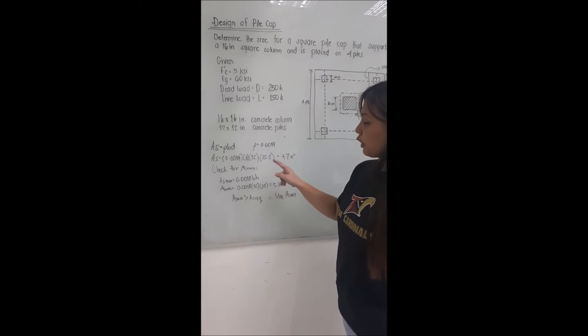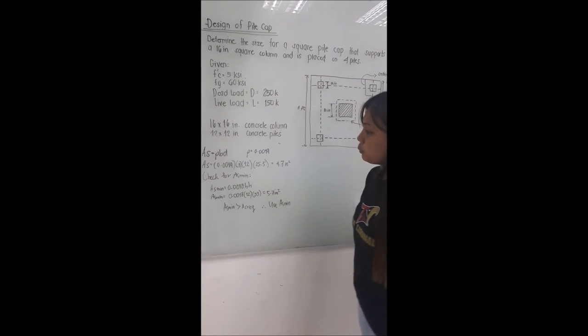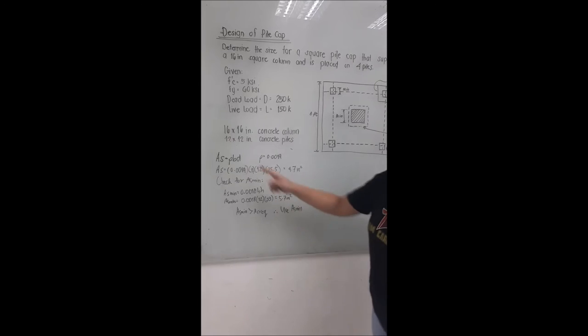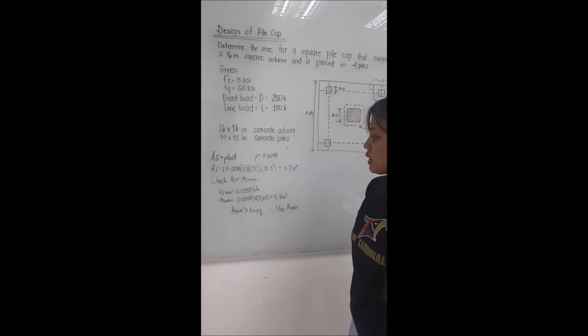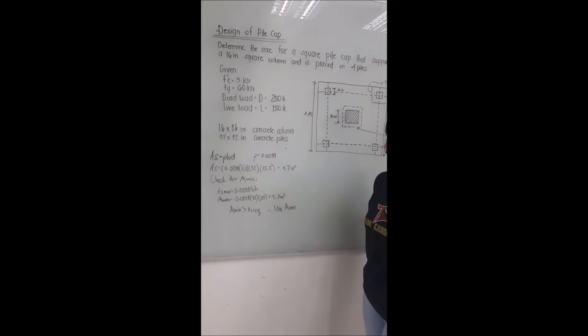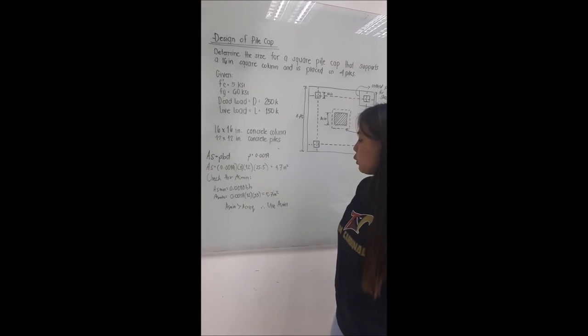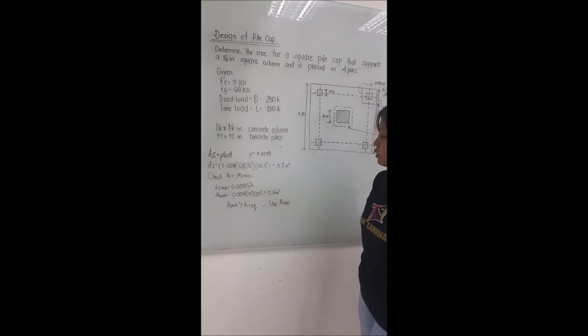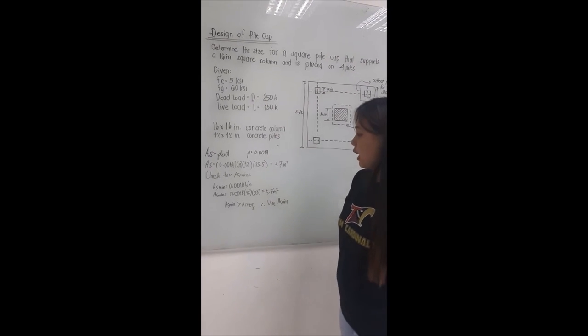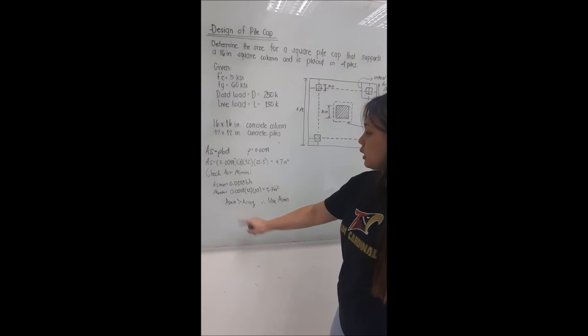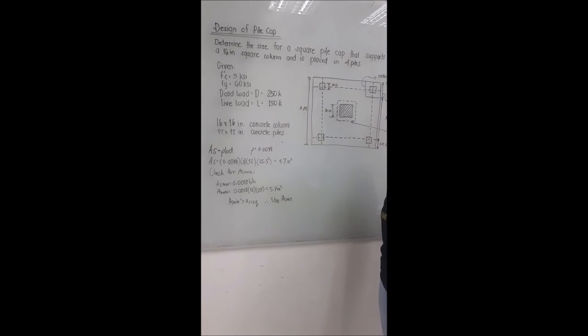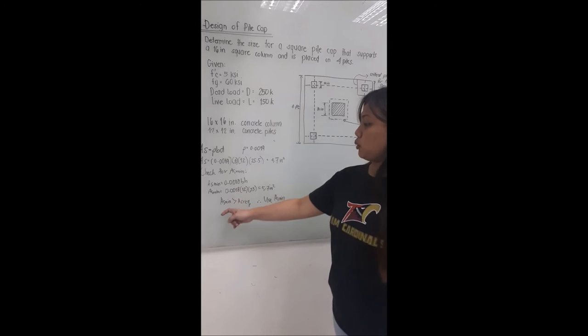Now we should check for AS minimum. For AS minimum, we use the formula rho times b times d where rho is 0.0018 times base times height. We get the value of 5.7 square inches. From the values we get, it shows that AS minimum is greater than the AS required. Therefore, we should use the AS minimum as our area.